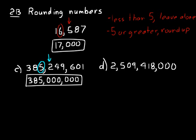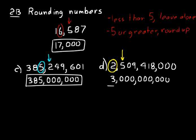Look at practice problem D — round this one to the nearest billion. Rounding to the nearest billion means we circle the two because it's in the billions place, and put an arrow over the hundred millions digit, which is a five. Since it's five or greater, we round the circled digit up — rounding up to a three. So our answer is three billion.